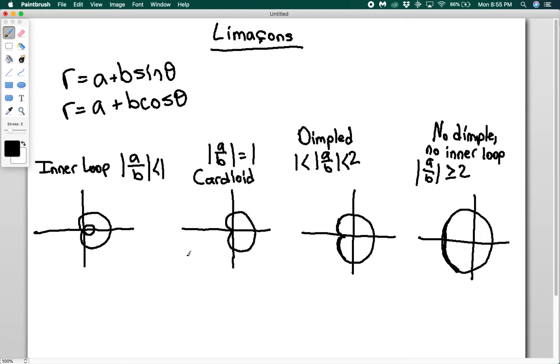And the way you determine whether these limasons are like this, or are instead, you know, I could have something like this, right? I could have it vertical instead of horizontal, or I could have it instead like this. So how do we control what direction it's pointing in?